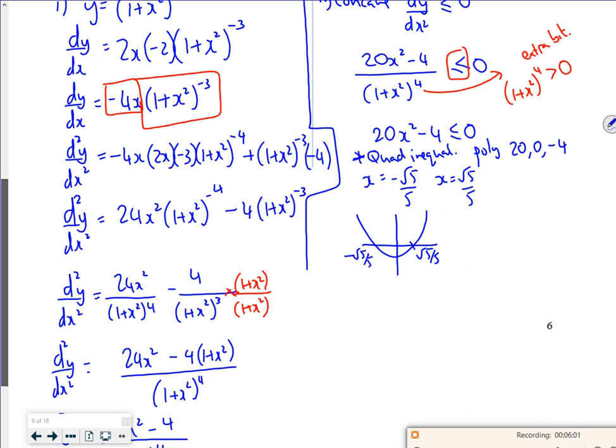And I'm looking where it's below the x-axis. So it's below the x-axis between those values there. So we're going to say it's concave when x belongs to the reals such that minus root 5 over 5 is less than x, and x is less than root 5 over 5. There we go.